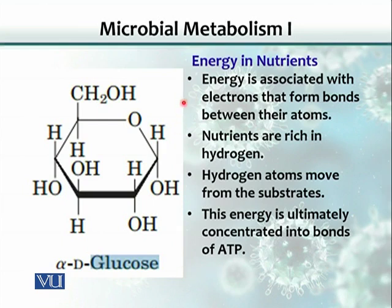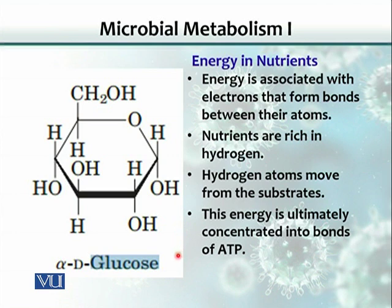Energy is associated with electrons that form bonds between atoms. Nutrients are rich in hydrogen — for example, this glucose molecule is rich in hydrogen. Hydrogen atoms move from various substrates, and energy is ultimately concentrated into the bonds of ATP.